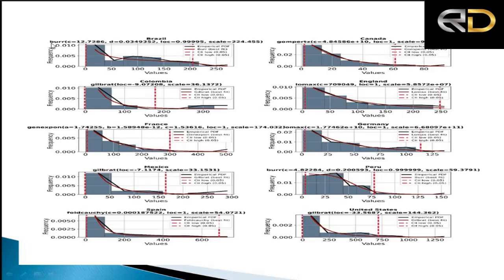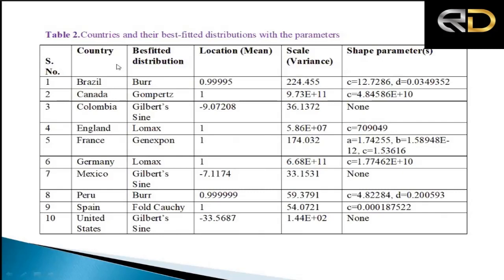For Brazil, the Burr distribution is best fitted; for Canada it is Gumbel; for Colombia it is Gilbertson. Burr is again best fitted for Peru. Different distributions are best fitted for different countries, giving us an idea of average incidences and deviations. Table 2 lists the best-fitted distributions for all top 10 countries along with their location, scale, and shape parameters, including skewness and kurtosis coefficients.